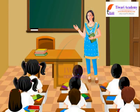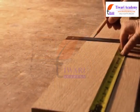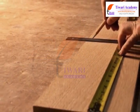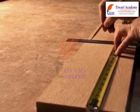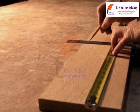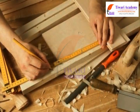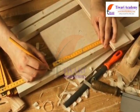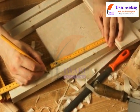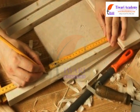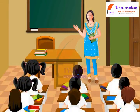Let us study about standard unit of measurement. Measurement means the comparison of an unknown quantity with some known quantity. This known fixed quantity is called a unit. When we say the measurement of a length is 10 meters, we actually mean it is 10 times the definite length called meter. In this lesson, we will discuss about standard unit of measurement in detail.